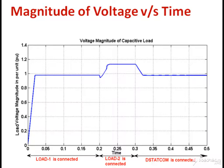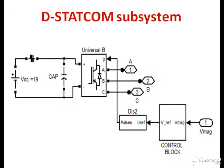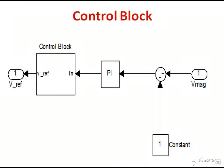This is the internal structure of D-STATCOM where VRMS is compared to a reference value and an error signal is obtained, which is fed to the PWM generator. The output of the PWM generator are the pulses which are fed to the inverter device. The internal control block is shown in the figure: VRMS is compared with V reference, which is 1, and the error signal is fed to the PI controller. The PI controller output is given to the control block where the error signal is generated and passed forward.